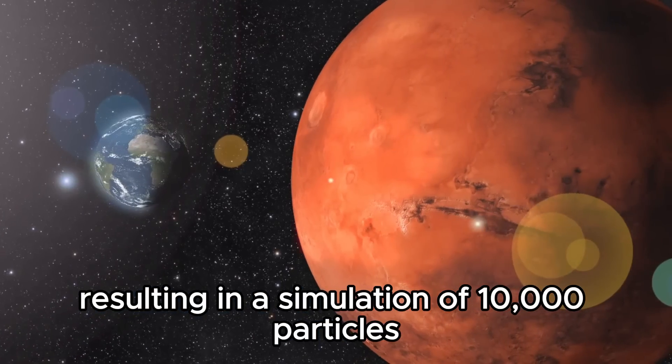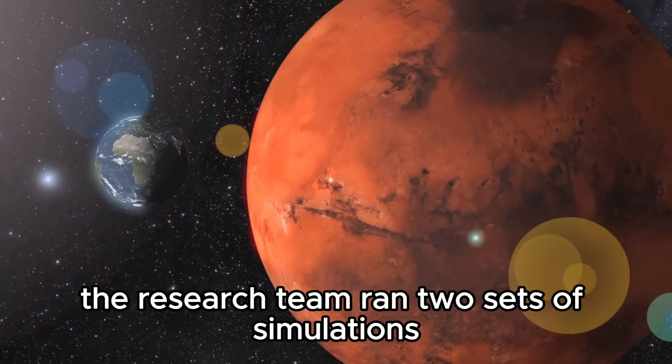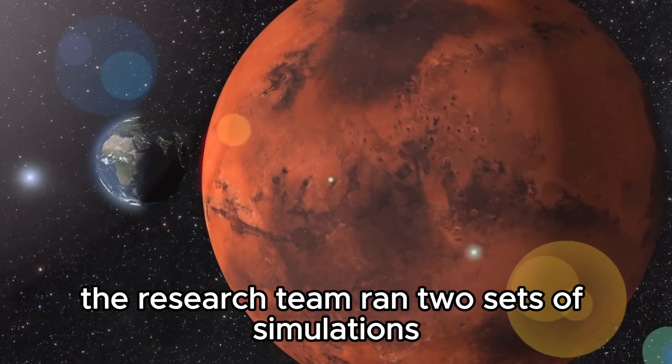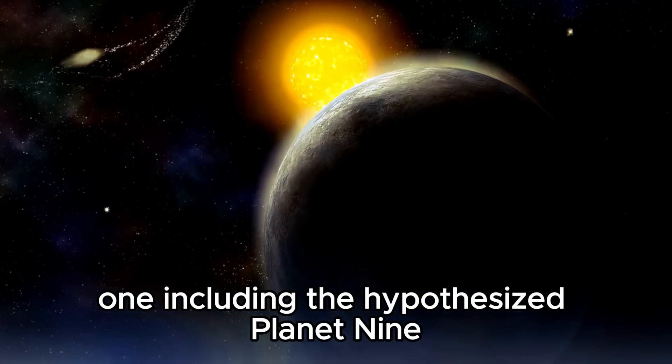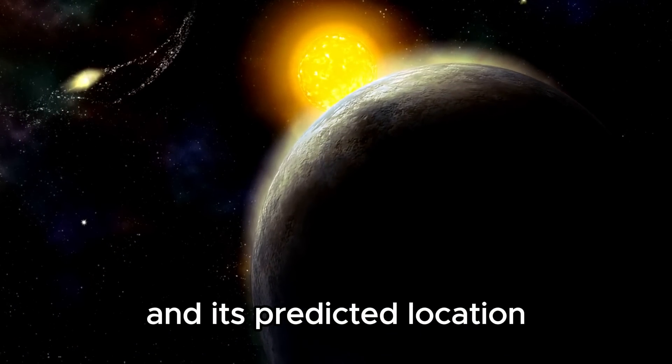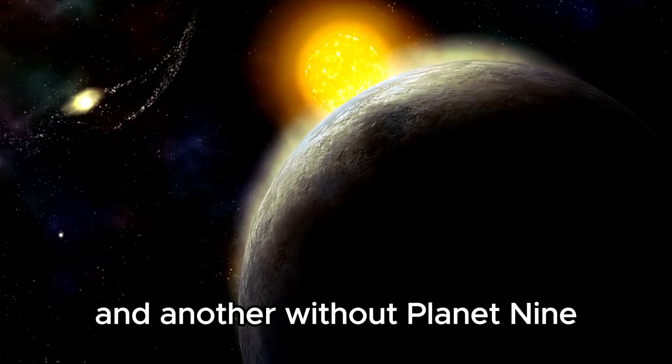They chose TNOs with perihelia greater than 30 astronomical units and semi-major axes ranging from 100 to 5,000 astronomical units, resulting in a simulation of 10,000 particles. The research team ran two sets of simulations, one including the hypothesized Planet Nine and its predicted location, and another without Planet Nine.